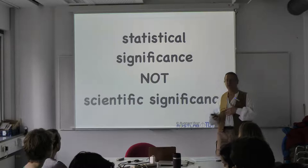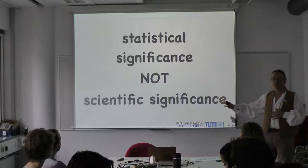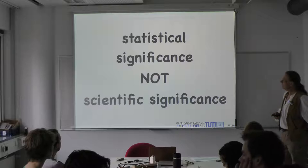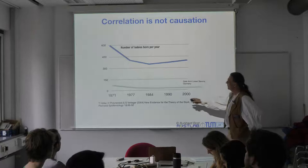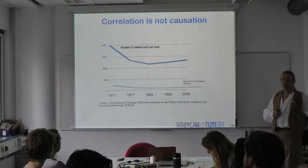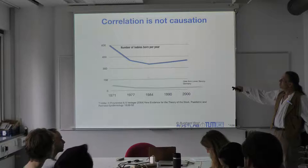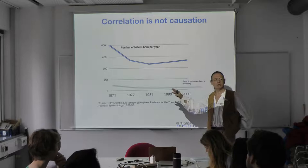Now, this difference between correlation and causation — I'd like to bring up in a simple story. These are data from 1971 to 2000 collected in a state in the north of Germany, so-called Lower Saxony. What it shows is how the number of babies born in a particular local district changes over the years.